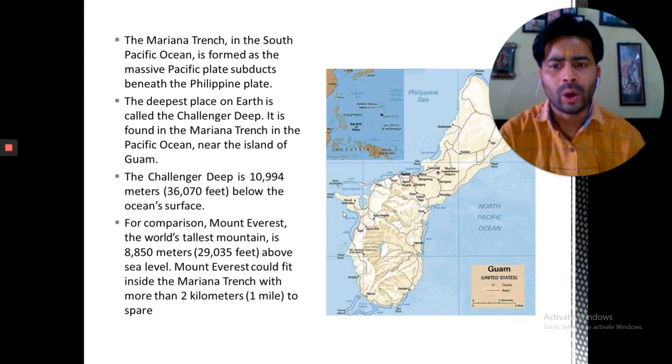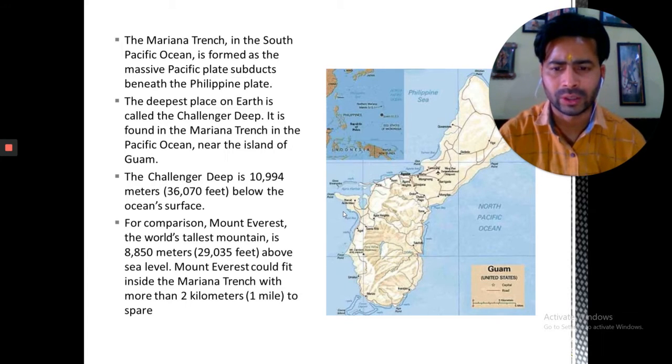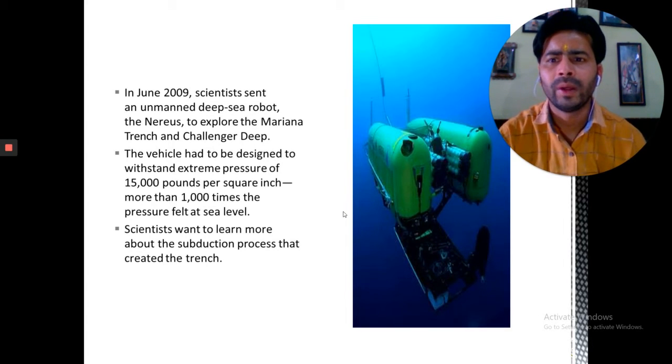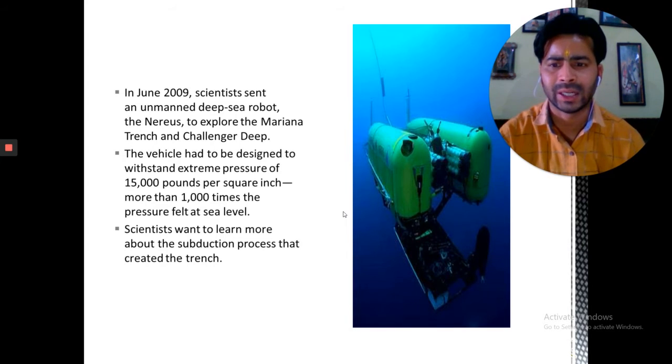For comparison, Mount Everest, the world's tallest mountain, is 8,850 meters above sea level. Mount Everest could fit inside the Mariana Trench with more than two miles to spare. In June 2019, scientists sent an unnamed deep-sea robot to explore the Mariana Trench and Challenger Deep. The vehicle had to be designed to withstand extreme pressure of 50,000 pounds per square inch, more than 1,000 times the pressure at sea level. Scientists want to learn more about the subduction process that created the trenches.